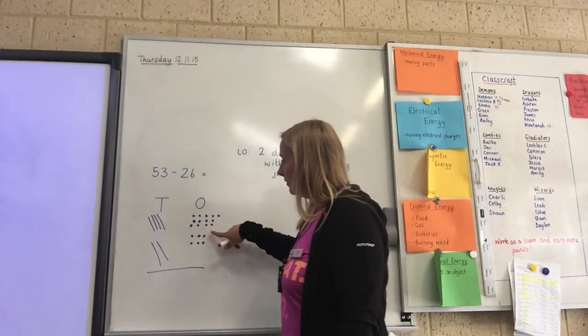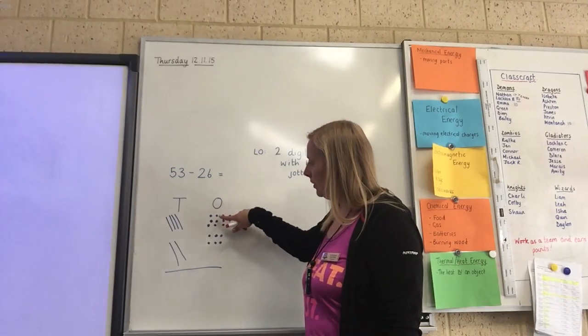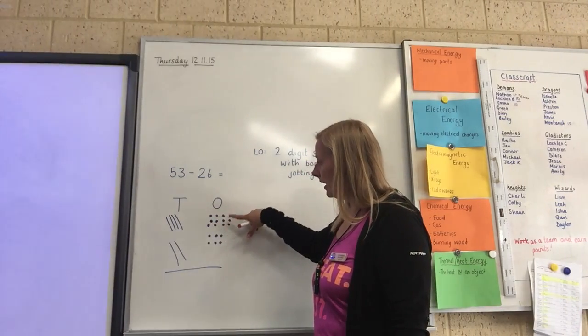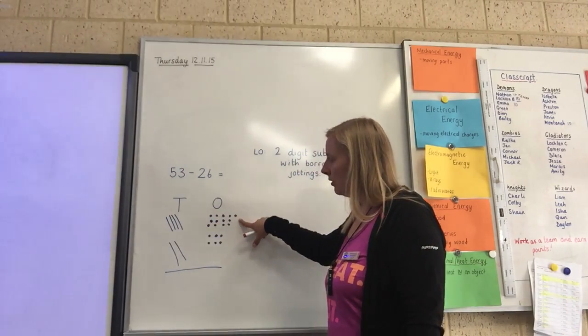So in our wands column now, we have got one, two, three, four, five, six, seven, eight, nine, ten, eleven, twelve, thirteen.